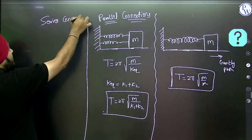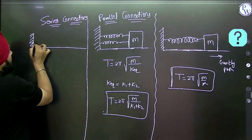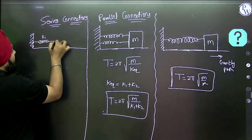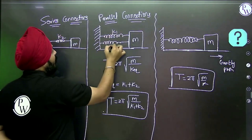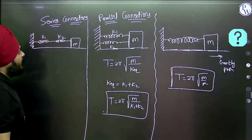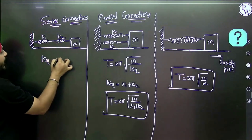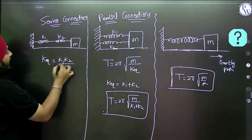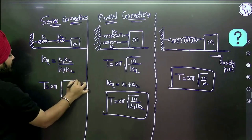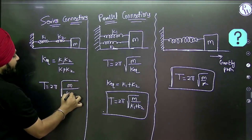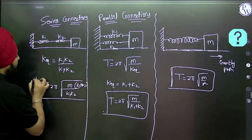For the case of series connection of springs — suppose one spring of spring constant K1 and another of K2 are connected in series — K equivalent is K1·K2 divided by K1 plus K2. So the time period T is equal to 2π under root of M divided by (K1·K2)/(K1 plus K2).